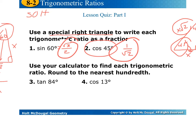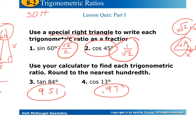Use your calculator to find each trigonometric ratio rounded to the nearest hundredth. Tangent of 84 gives you 9.51. And cosine of 13 gives you 0.97. Remember, the degrees refers to the angle, and the result is the proportion of the side lengths.